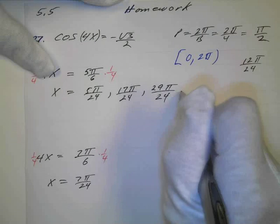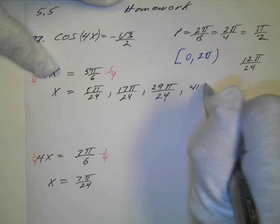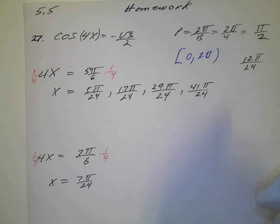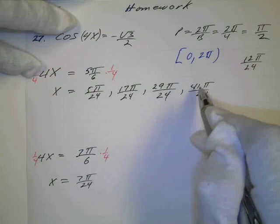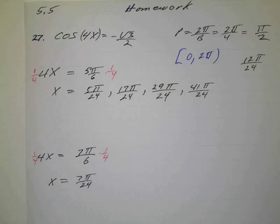And I still don't get to 48, so I'll add another 12. And what do I get? 31, 41. π over 24. I still don't have 48. So if I add another 12, if I add 12, that's 53. So that's going to be too big. So those are my four solutions.